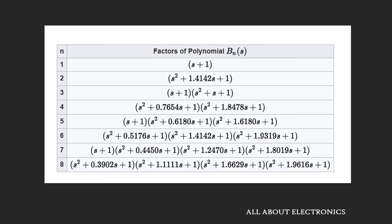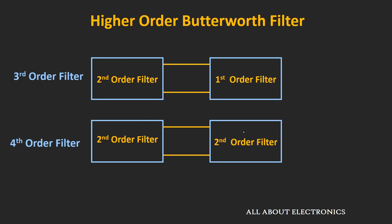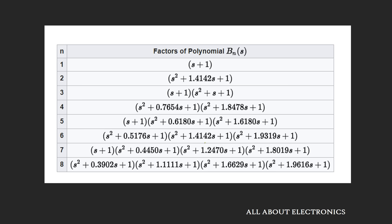The same procedure used for low pass filter design applies to high pass filter design, and the same Butterworth polynomials can be used. For a third order filter, cascade a second order filter with a first order filter; for a fourth order filter, cascade two second order filters. As an exercise, try to design a fourth order Butterworth high pass filter with a cutoff frequency fc of 10 kHz, and share your design values in the comments.